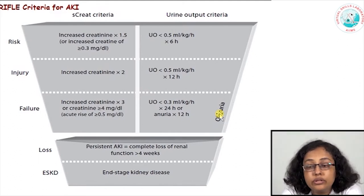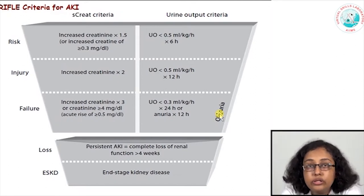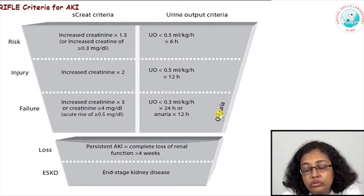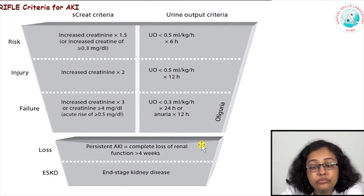Each RIFLE stage was defined based on creatinine and urine output. Risk: 1.5 times increase in creatinine or urine output less than 0.5 ml/kg/hour for at least 6 hours. Injury: doubling of serum creatinine or persistent decrease in urine output for 12 hours. Failure: 3 times increase in creatinine or an absolute increase of at least 4 mg/dL, or more prolonged decrease in urine output or anuria for 12 hours. Loss: persistent failure or complete loss of renal function for at least 4 weeks.